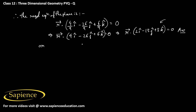We can also write this in Cartesian form as 2x − 13y + 3z = 0. These are the final answers. Thank you.